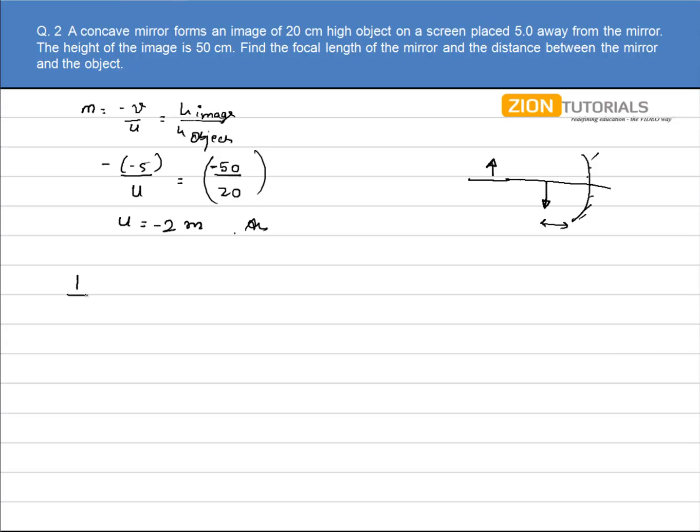Now using the mirror formula, that is 1 by v plus 1 by u is equal to 1 by f. Substituting the value of v and u with sign conventions, I have minus 5 minus 2 is equal to 1 by f. So the focal length comes out to be minus 10 by 7, which comes out to be 1.44 meters with a negative sign.